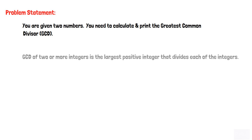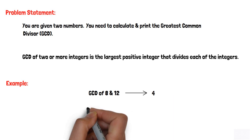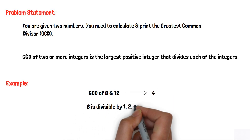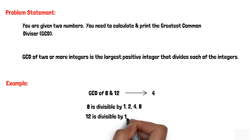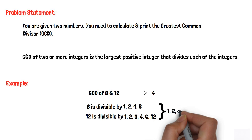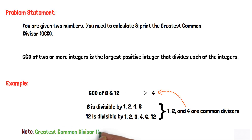The greatest common divisor (GCD) of two or more integers is the largest positive integer that divides each of the integers. For example, the GCD of 8 and 12 is 4, since 8 is divisible by 1, 2, 4, and 8, and 12 is divisible by 1, 2, 3, 4, 6, and 12. So 1, 2, and 4 are the common divisors, and 4 is the greatest common divisor.